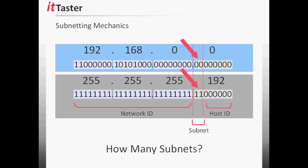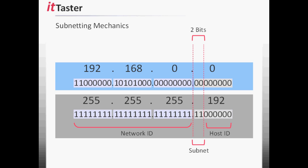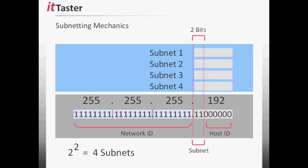So how many subnets have we created in this example? To determine the number of subnets, we need to raise 2 to the power of the number of new network bits borrowed from the host ID. In this example, 2. 2 to the power of 2 equals 4, which gives us 4 subnets. We can also see this if we count upwards in binary using 2 bits: 00, 01, 10 and 11 — which again gives us 4 subnets.